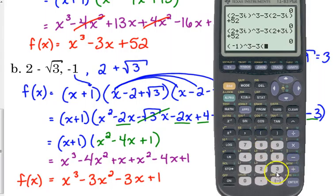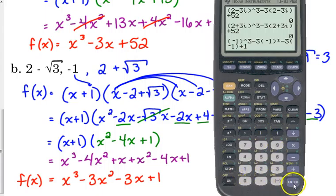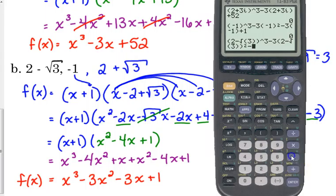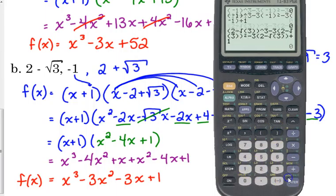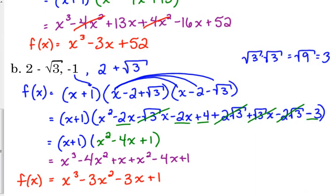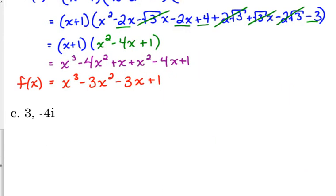It doesn't tell you what the mistake is, but it does let you know if there is one. Now, be careful. When you check negative numbers, when you're raising negative numbers to powers, you need to make sure that you put them in parentheses. If not, it will not calculate correctly, and you will think that you have a mistake when you don't. So, again, usually if one of them works, then the other ones do as well, but it can't hurt to check it. So, negative 1 works. 2 minus the square root of 3 works. 2 plus the square root of 3 is going to work as well.